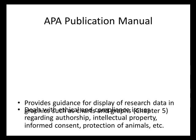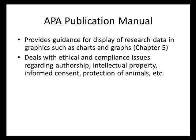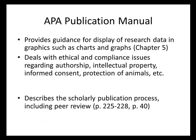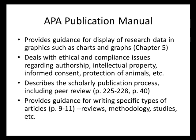The APA Publication Manual, in addition to its mechanical aspects, addresses the display of research data, and it gives us detailed instructions on how to display our data in graphics such as charts and graphs. It also deals with ethical and compliance issues such as authorship, intellectual property, informed consent, and protection of animals. There are sections that describe the scholarly publication process and what peer review is, as well as sections on particular types of scholarly publications, such as review articles, articles addressing methodology, and different kinds of studies.